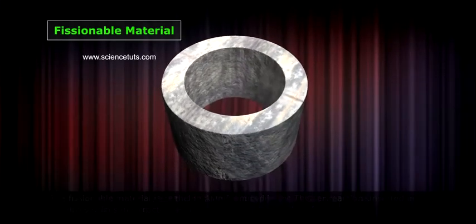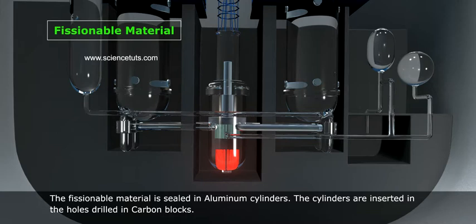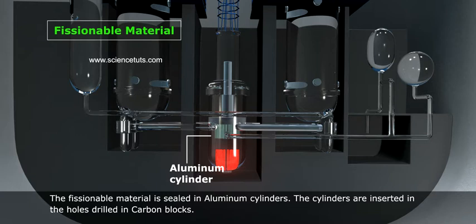The cylinders are inserted in the holes drilled in carbon blocks. Two, source of neutrons: a suitable neutron source is placed conveniently in the neighborhood of the fuel.